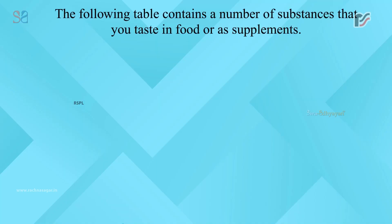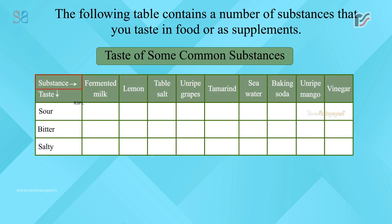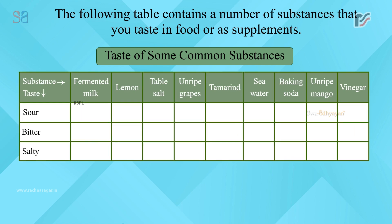The following table contains a number of substances that you taste in food or as supplements. Taste of some common substances: Fermented milk, lemon, table salt, unripe grapes, tamarind, seawater, baking soda, unripe mango, vinegar. Sour substances: fermented milk, lemon, unripe grapes, tamarind, unripe mango, vinegar. Bitter: baking soda. Salty: table salt, seawater.